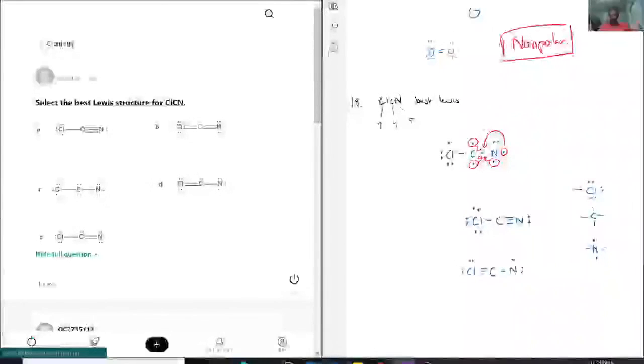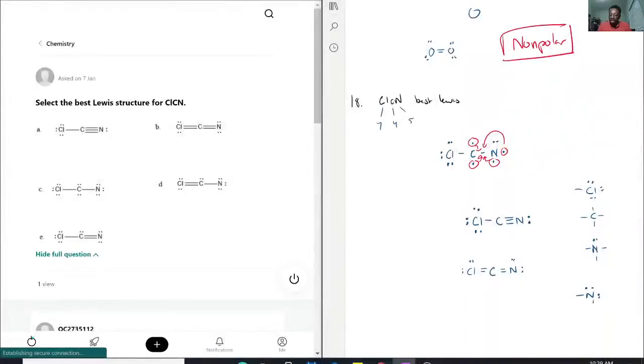But let's look at the formal charges. Carbon stays the same because it still has four, but nitrogen now has two bonds and two lone pairs. It turned a bond into a lone pair, so that would actually change its formal charge to be minus one.